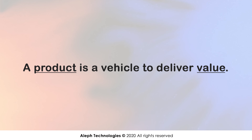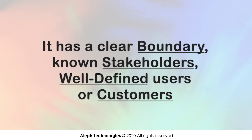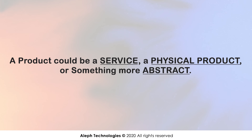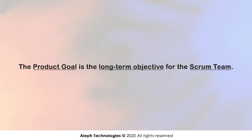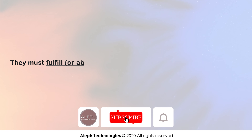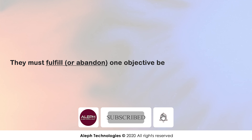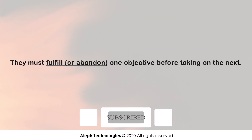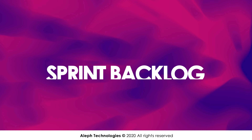A product is a vehicle to deliver value. It has a clear boundary, known stakeholders, well-defined users or customers. A product could be a service, a physical product, or something more abstract. The product goal is the long-term objective for the Scrum team. They must fulfill or abandon one objective before taking on the next.